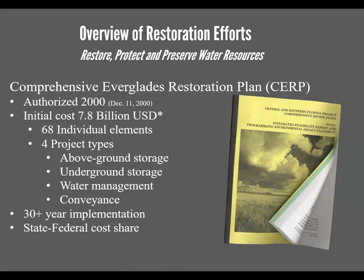The Comprehensive Everglades Restoration Plan — CERP — is embodied in what's called the Yellow Book, which is multiple volumes of really great information. It's essentially the plan to get us back on track. It was authorized back in 2000, and the initial cost was $7.28 billion. It has 68 individual projects, about a 30-year implementation window to build out. The four main project types are storage, water management, conveyance, and treatment.